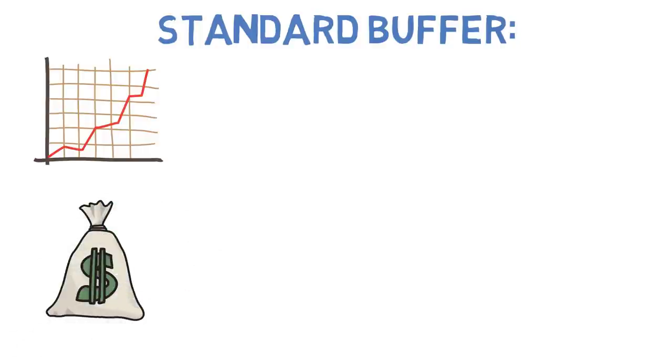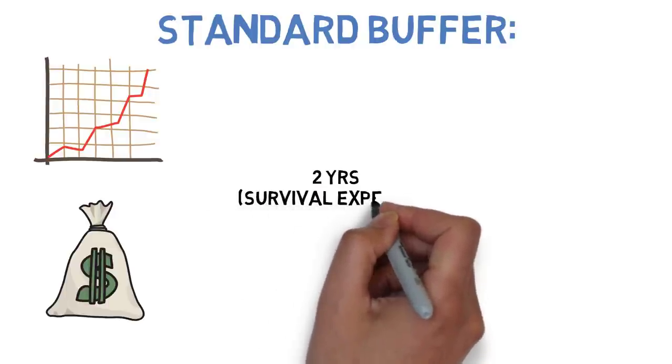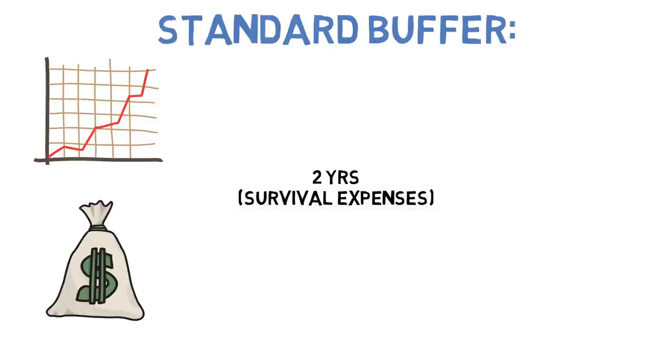If we assume that we have a cash buffer that's large enough to cover two years worth of survival expenses, which I'm defining as the expenses that you can't get by without paying, in other words your burn rate or emergency mode expenses.